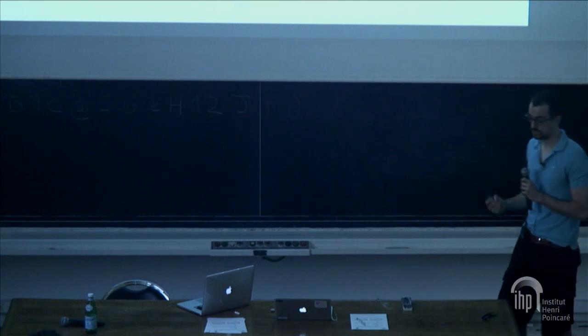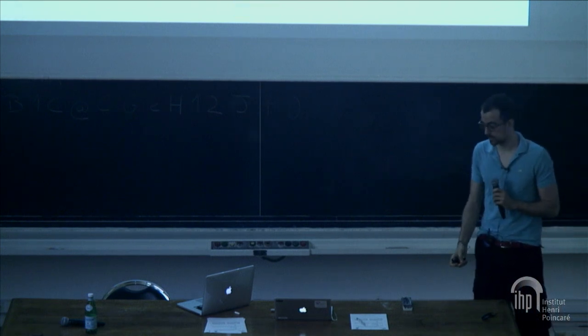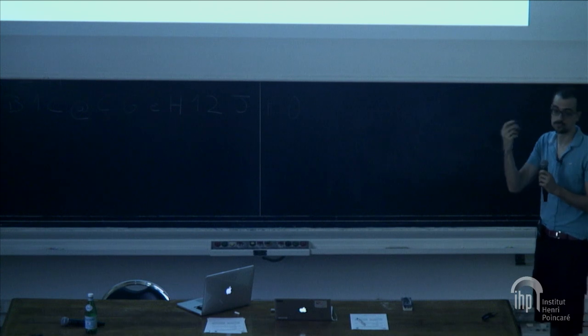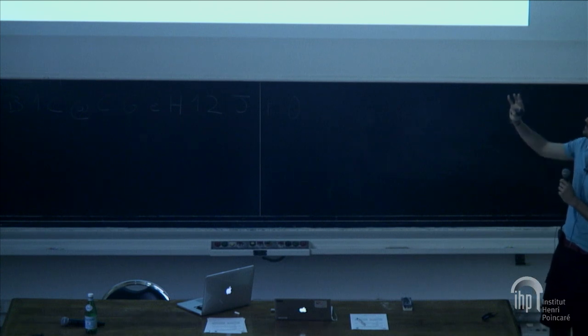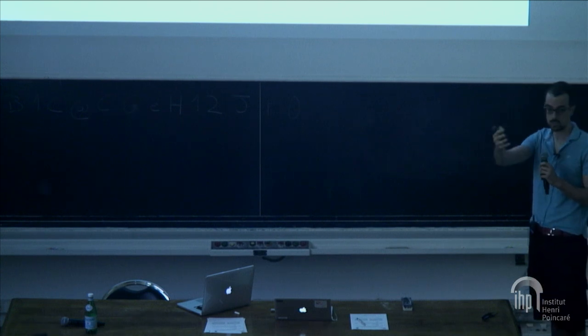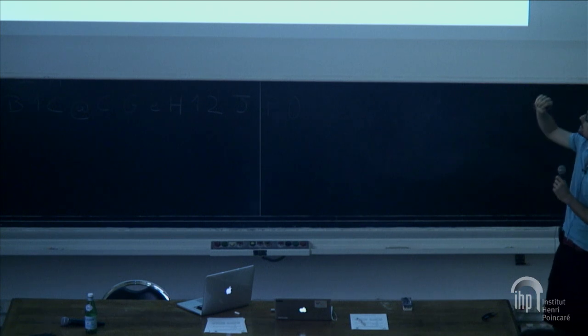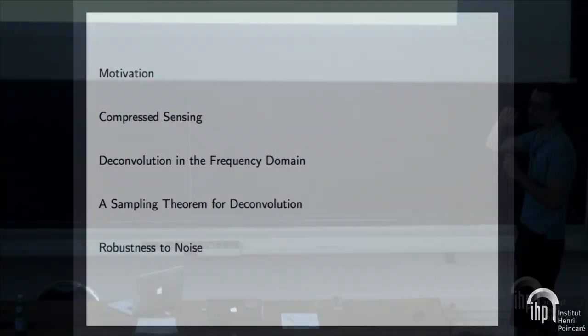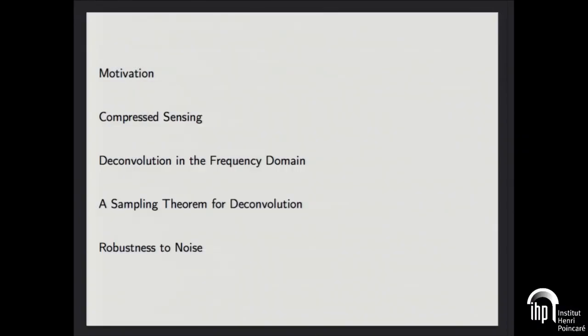I'm going to start by motivating what I'll talk about with two practical applications. Then I'll talk a little bit about compressed sensing. Then I will explain how to do deconvolution in the frequency domain without taking into account sampling. Then I'll explain our main result, which is a sampling theorem for deconvolution, and if I have time I'll talk about robustness to noise. If anything isn't clear, feel free to stop me.